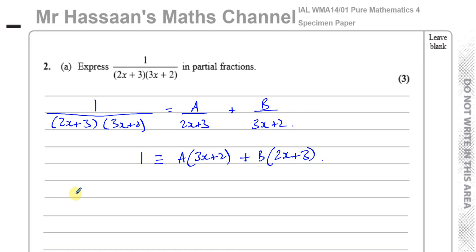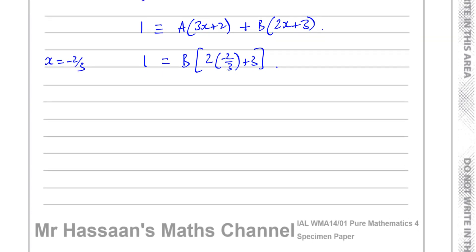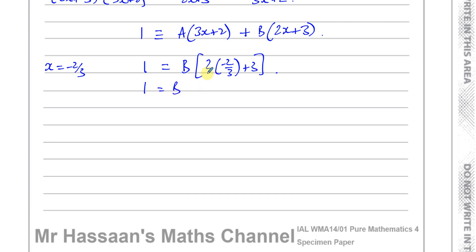In this case, it's easier to substitute values that make the brackets zero. The value of x that makes (3x + 2) equal zero is x = −2/3. Substituting x = −2/3, the A term disappears, leaving 1 = B(2(−2/3) + 3), which gives 1 = (5/3)B, so B = 3/5.